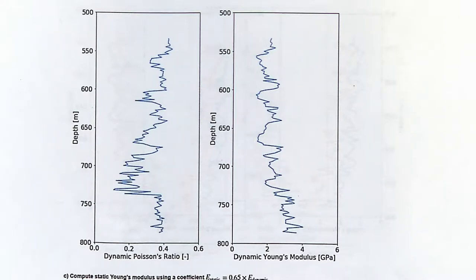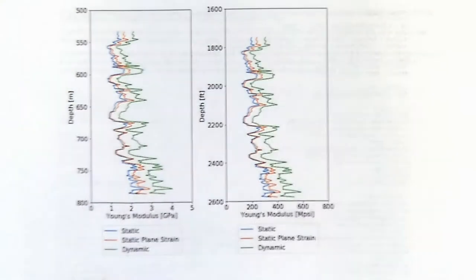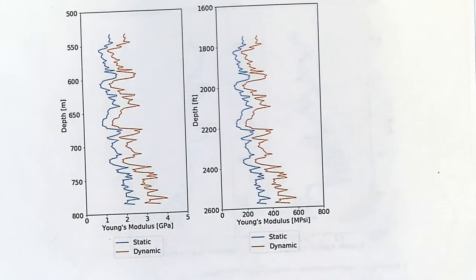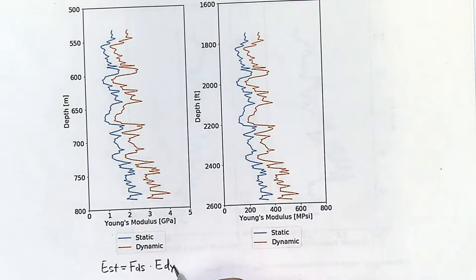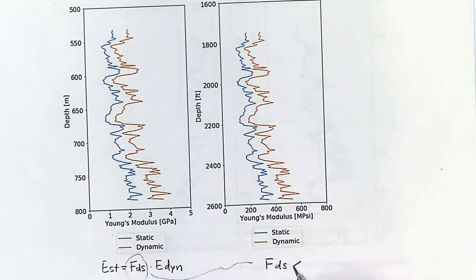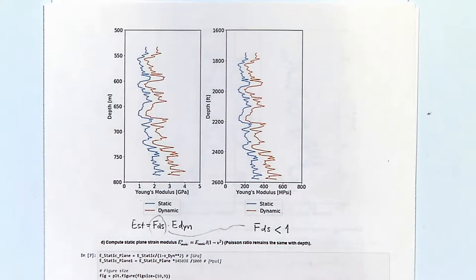After that, we use a conversion factor to go from the dynamic Young's modulus to the static Young's modulus. The static is equal to the factor FDS — which goes from dynamic to static — times the dynamic value. This FDS factor is always smaller than one. The stiffness measured with well logging tools is much higher than the actual stiffness of the rock, because waves deform the rock only a tiny bit.